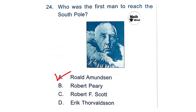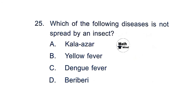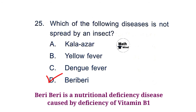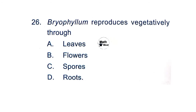Question 25: Which of the following diseases is not spread by an insect? Option D is correct: beriberi. Beriberi is a nutritional deficiency disease caused by deficiency of Vitamin B1. All others are spread by insects. Question 26: Bryophyllum reproduces vegetatively through — option A is correct: leaves.